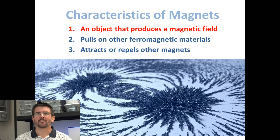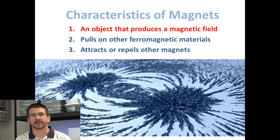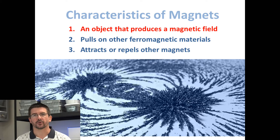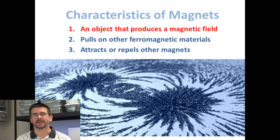As we've mentioned several times already, all magnets do have three characteristics in common. They produce magnetic fields, they attract the ferromagnetic materials, which is what we discussed in the last lesson, and then they can also attract or repel other magnets. Today, we're going to be focusing on the magnetic fields that these magnets do produce.